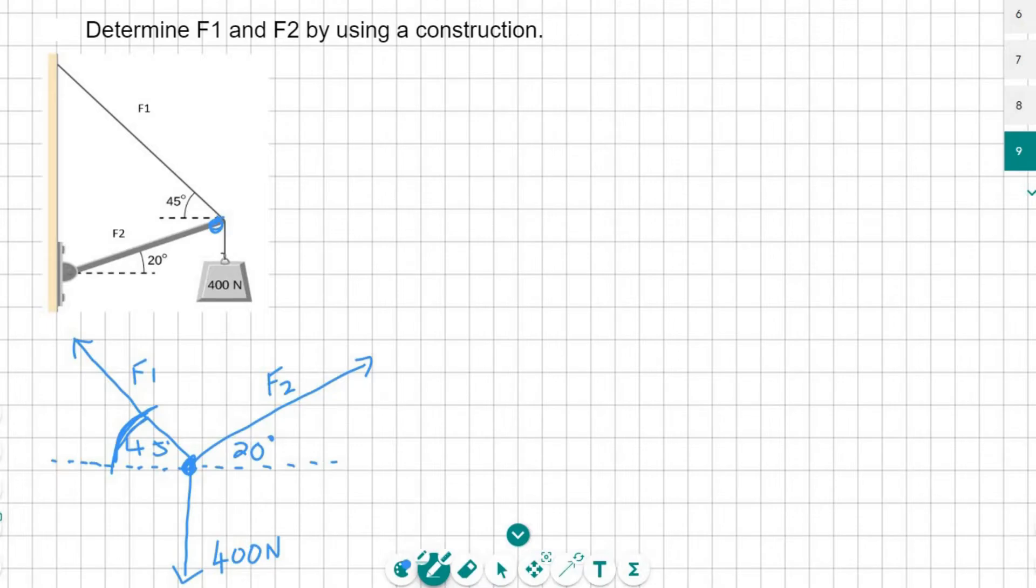But remember, we need a scale. So they're saying 400 newtons. So we could probably say that 1 centimeter is 40 newtons, because then our line only has to be 10 centimeters.